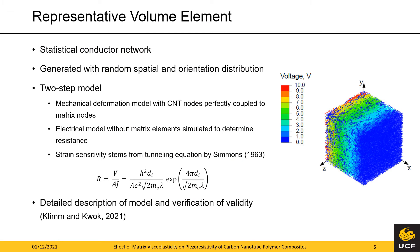Let's talk about the representative volume element, which is illustrated on the right-hand side. The RVE consists of a cubic volume filled with a statistical conductor network. The position and orientation are created randomly for a desired volume fraction. Then the analysis is split into two steps. First, a mechanical finite element model is created where the carbon nanotubes are modeled with truss elements and embedded in brick elements with the viscoelastic properties of the matrix. The deformation is then applied to the matrix nodes and the coupling between nanotube nodes and matrix nodes ensures the deformation of the conducting network. In the second step, the matrix elements are omitted and only the conductive network is modeled for an electric analysis step, where a potential difference is prescribed between two phases and the resulting potential and current density distribution is calculated by the finite element solver.